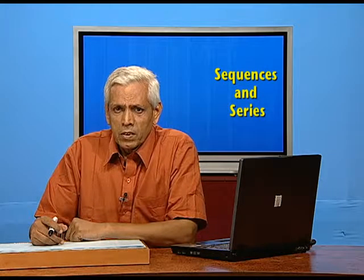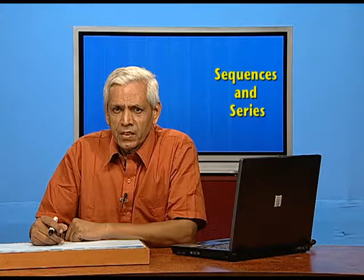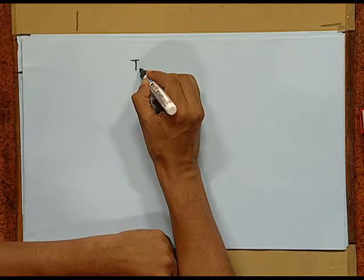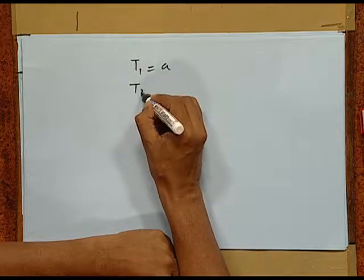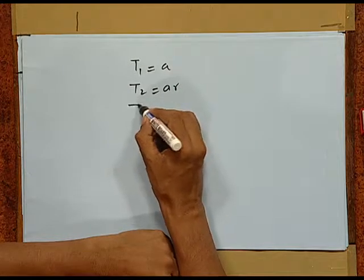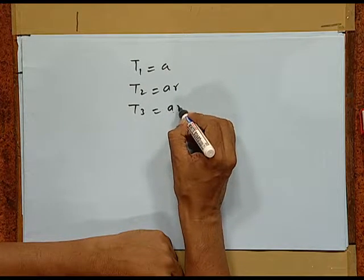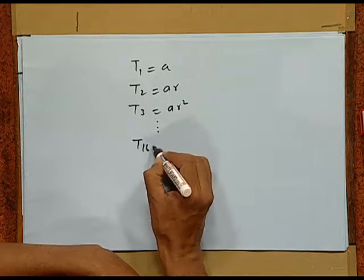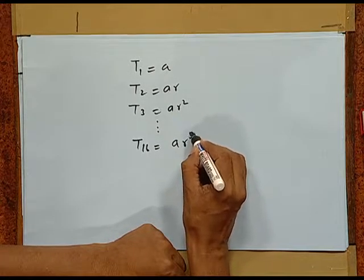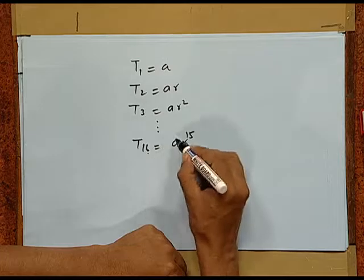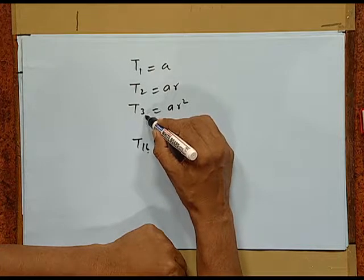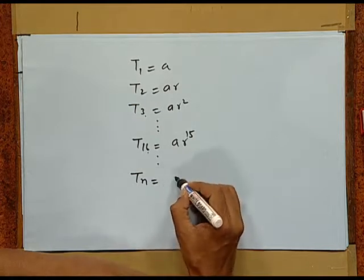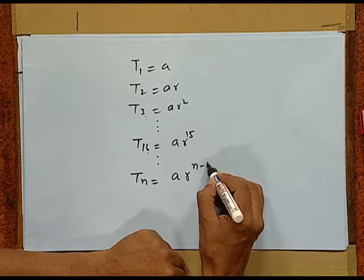Now, as before, we have to find the nth term and also the sum of n terms. We have t1 = a, t2 = ar, t3 = ar², and so on. We can expect that t16 is simply ar raised to the power 15. This 15 is 1 less than 16, following the same pattern. So we can guess that in general, tn = a times r raised to the power n minus 1.